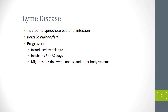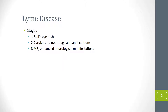Bacteria can affect any organ and cause a variety of symptoms, including flu-like symptoms and constitutional symptoms such as chills, fever, and malaise. The patient may develop arthralgias, but the most characteristic sign is the bullseye rash — a circular red ring with a light-colored center — which will appear within days or weeks.